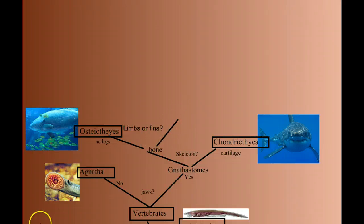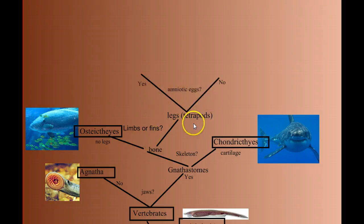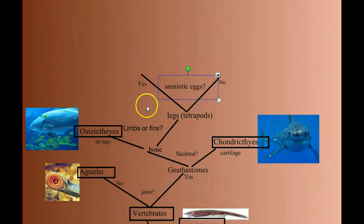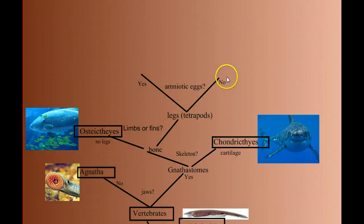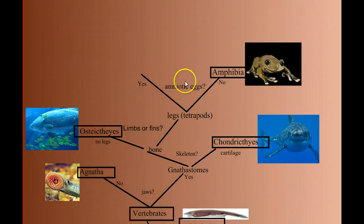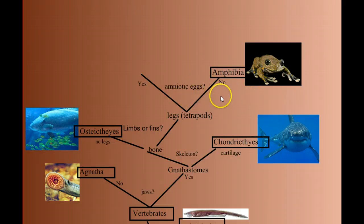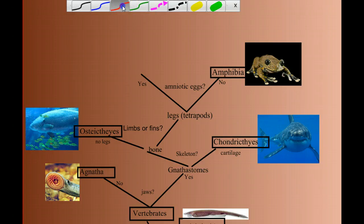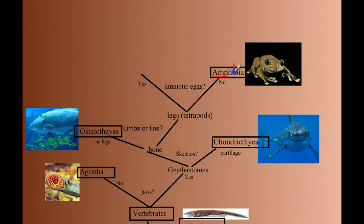But if we have limbs or legs, then we have a group called the tetrapods, and the next question is: do these vertebrates with legs have an amniotic egg or not? An amniotic egg allows animals to move fully onto land — it's a major step in evolution. If the answer is no, then we have the amphibians. Amphibians are an interesting case study: while they have legs and can live part of their life on land, they don't have an amniotic egg, and therefore have to return to water to reproduce. In fact, the word 'amphibia' means dual life — 'amphi' meaning dual and 'bia' meaning life — part in water and part on land.